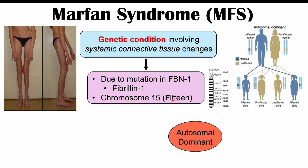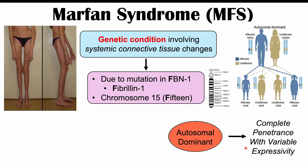Marfan syndrome is an autosomal dominant condition, meaning that we only need one affected allele in order to have this condition, so oftentimes an affected child will have at least one affected parent. Marfan syndrome has complete penetrance — if you have a mutation in FBN1, you will have signs and symptoms — but it has variable expressivity, meaning different people will have different signs and symptoms, even within the same family.